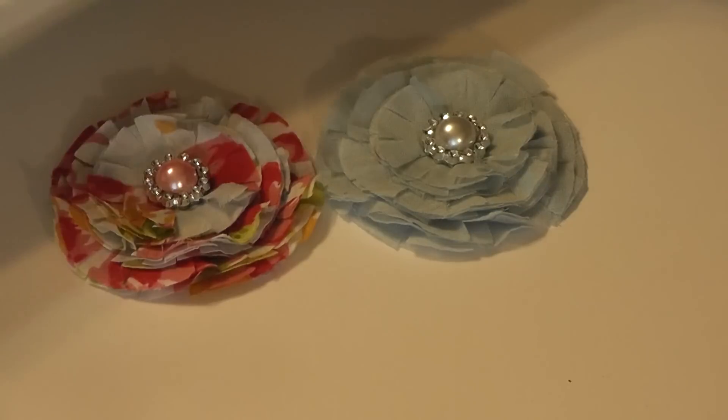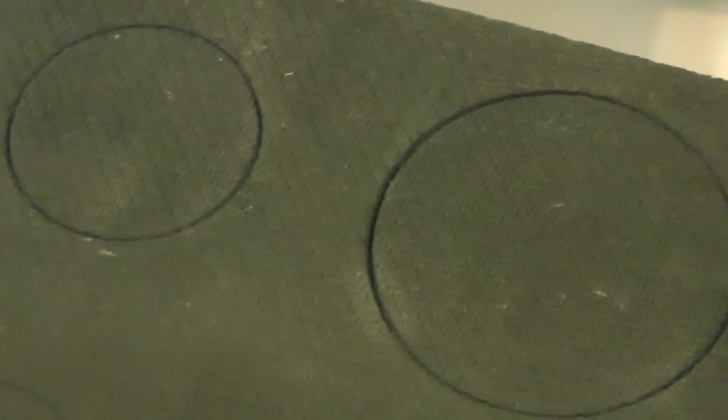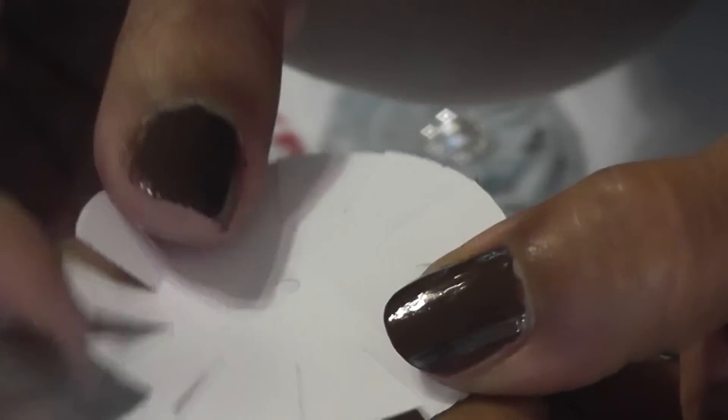Okay, so this is what the flowers look like. Now if you don't have this die, don't panic. You can use any circle die you have. The only difference is once you cut your circles, you're going to have to cut little slits all the way around to form your fringe.